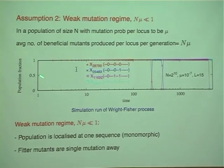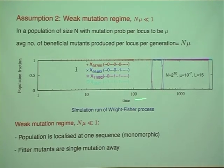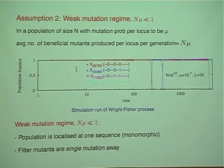The weak mutation assumption means N·μ ≪ 1, so the population is monomorphic — localized at a single sequence — and fitter mutants are a single mutation away. I can illustrate this with a simulation: the frequency of sequence 000 stays at 1, then a better mutant at distance 1 arises, takes over, and so on. I am focusing on this regime, ignoring clonal interference, though I will say a little about that at the end. These two assumptions together yield the adaptive walk model of Gillespie.